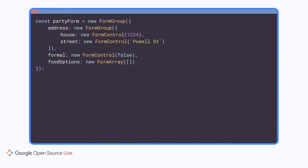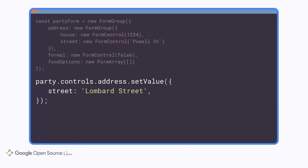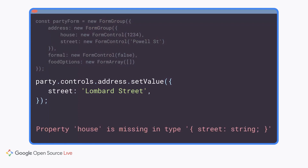Let's see some examples of sample reactive forms APIs and how the new types protect you from common errors. Here's our reactive form from earlier, representing a form for a party. We're trying to call .setValue, which lets us completely replace the value of the form and all of its descendants. But here, we're actually missing a key for house. This now produces a compile-time error in addition to the runtime error you previously would have gotten, telling us the property house is missing.